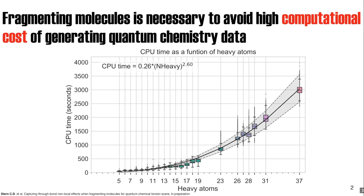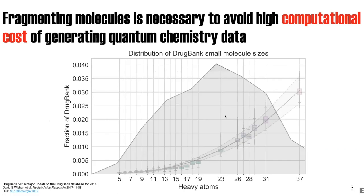If you overlay the distribution of FDA-approved small molecules taken from DrugBank, what you see is that on average most drug-like molecules have roughly 25 heavy atoms. From our estimate, that means an average torsion scan costs around 1 million CPU seconds, while a molecule with 50 heavy atoms costs approximately 300,000 CPU seconds—an order of magnitude less.